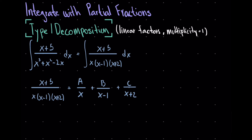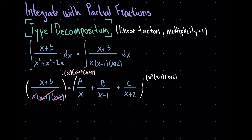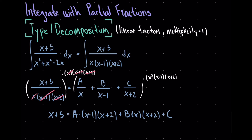To find A, B, and C, we multiply everything by x(x - 1)(x + 2) to clear the denominators. On the left we're left with x + 5. On the right: A·(x - 1)(x + 2) + B·x(x + 2) + C·x(x - 1).